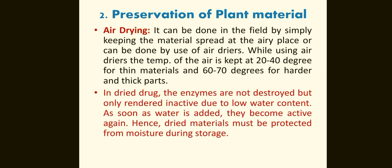Air drying can be done in the field by simply keeping the material spread in the open air, or it can be done using an air dryer. While using air dryers, the temperature is kept at 20 to 40 degrees for thin materials and 60 to 70 degrees for harder and thicker parts. In dried drugs, the enzymes are not destroyed but only rendered inactive due to the low water content. As soon as water is added, they become active again. Hence, dried material must be protected from moisture during storage.